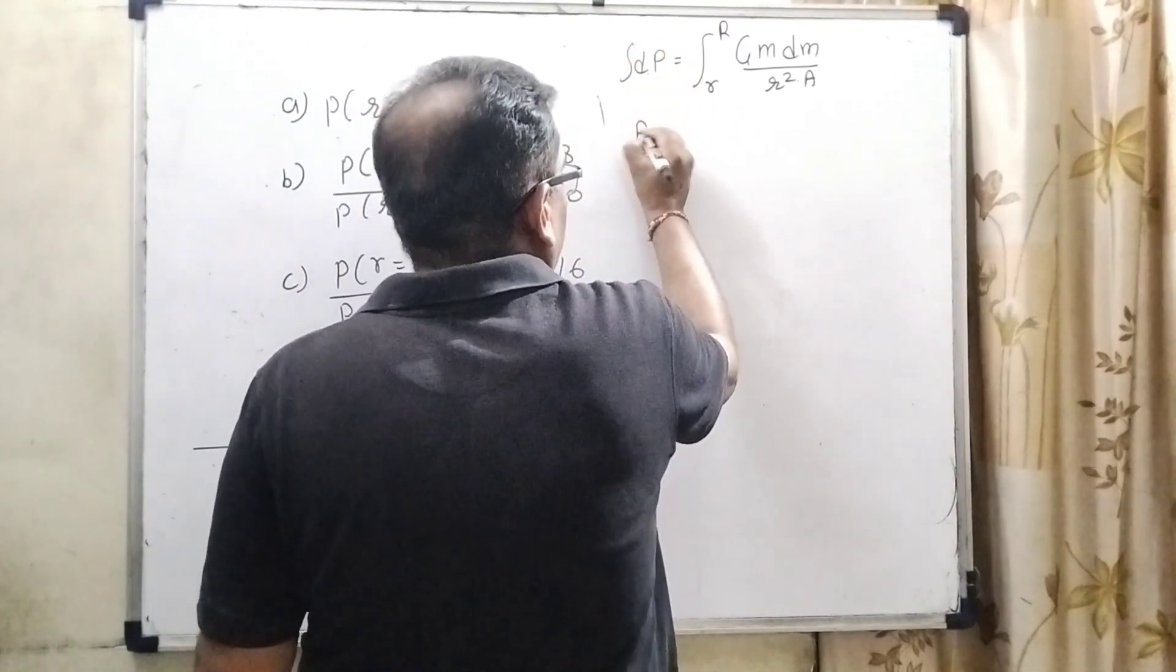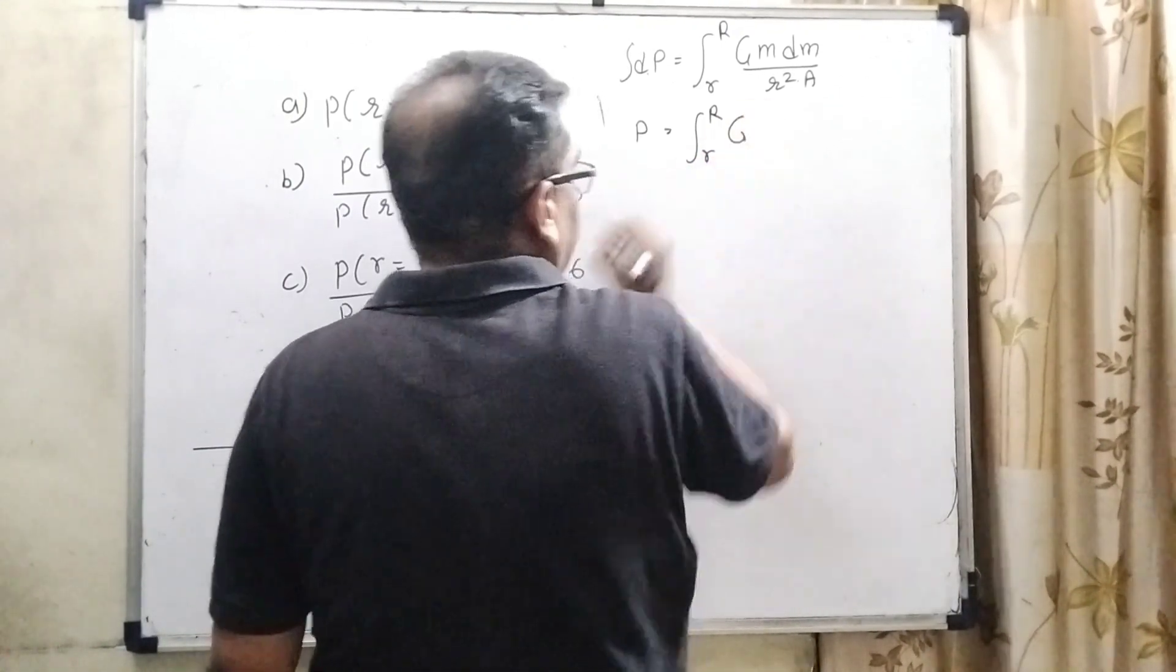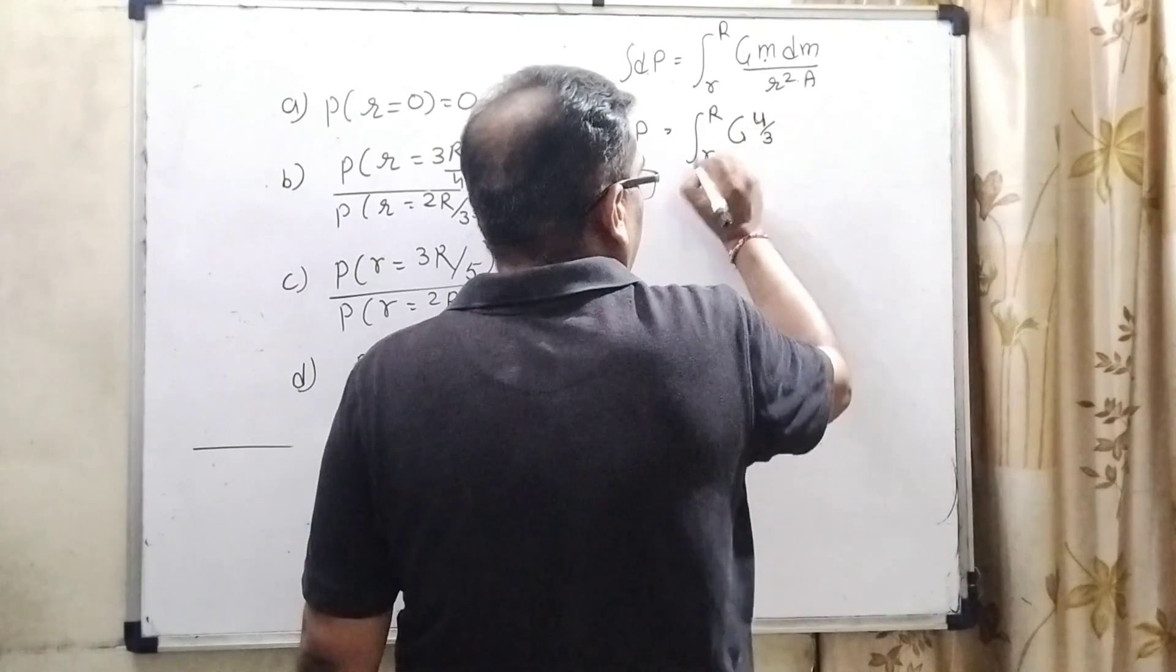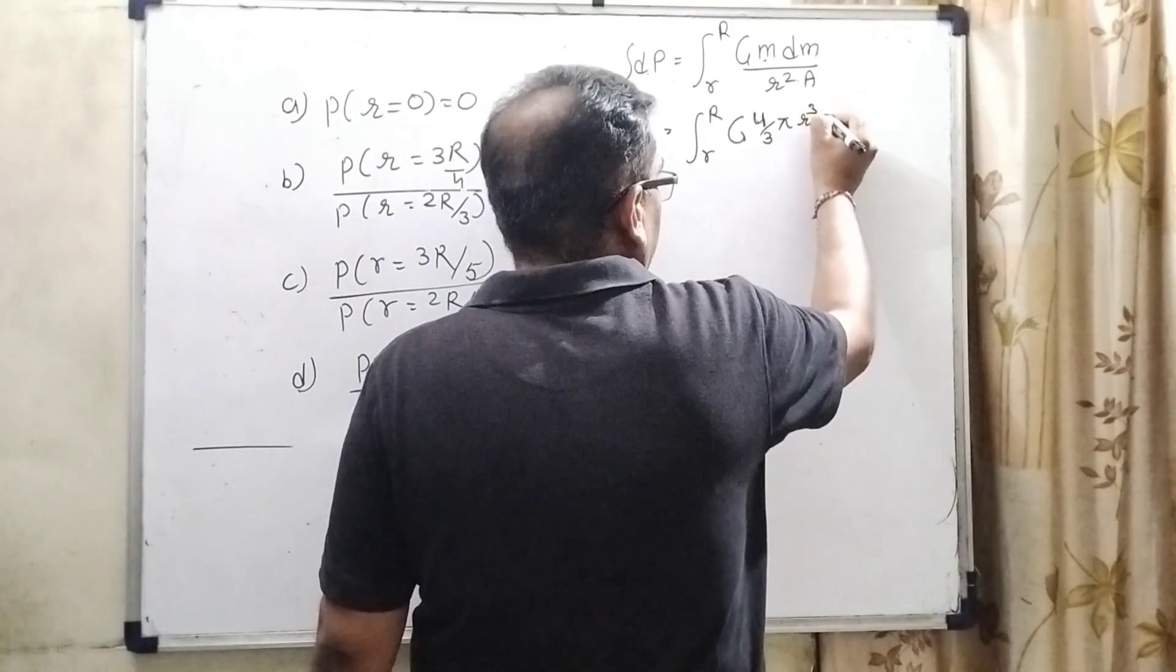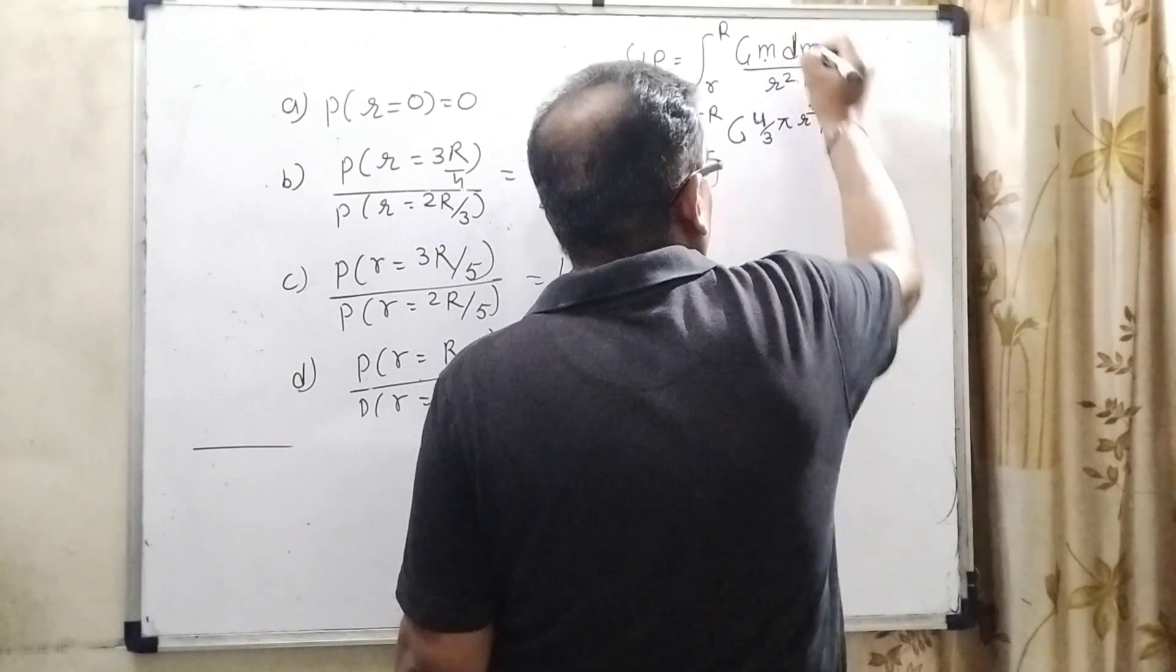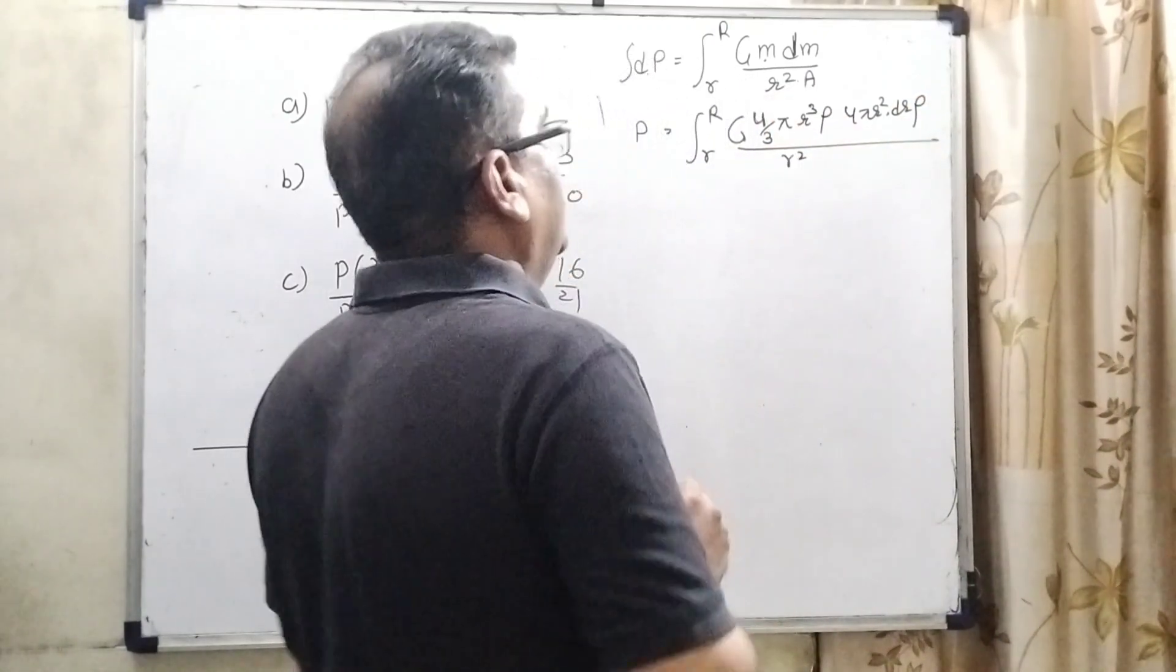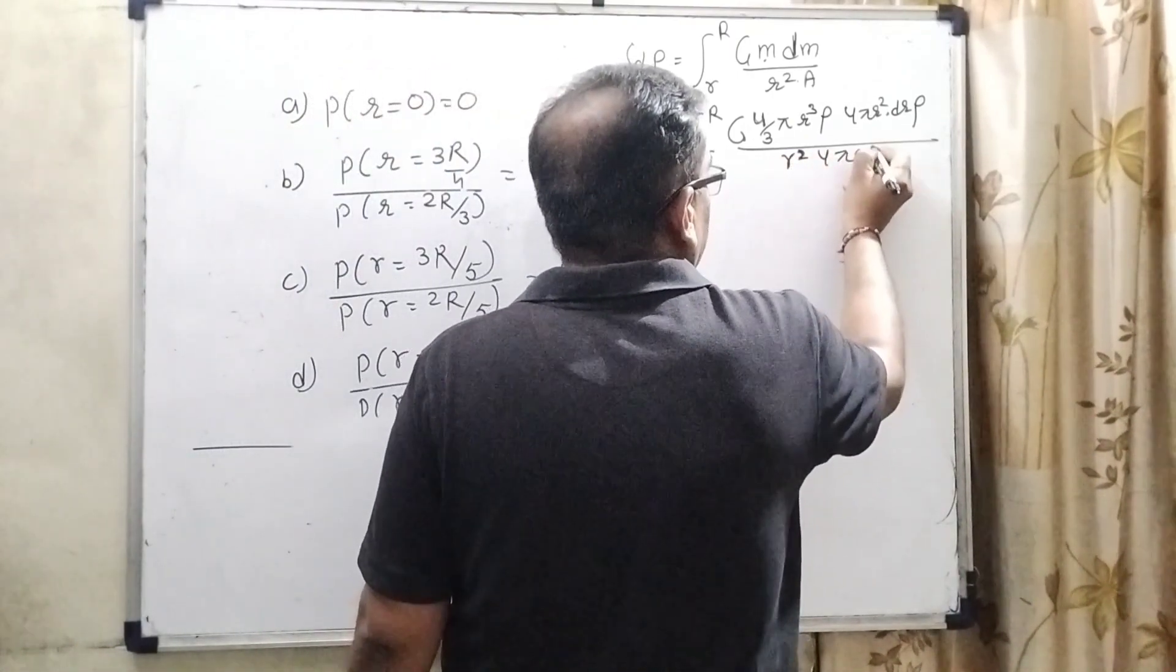Now substitute this value. Integration of dP becomes P, upper limit is capital R, capital G. What is the mass of the inner sphere? 4 by 3, this inner sphere of the liquid, 4 by 3 pi r cube and the density is rho. Here the mass of the circular ring is 4 pi r square dr and density is rho. Here r square and the area of this is 4 pi r square.